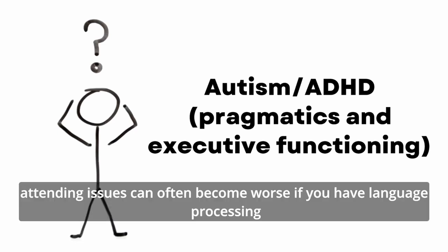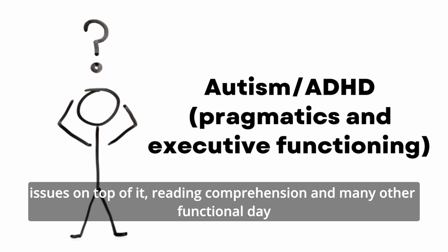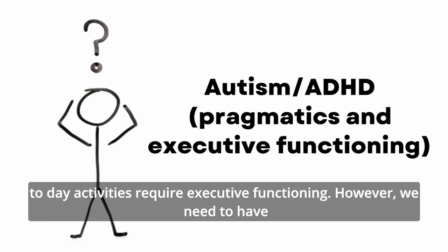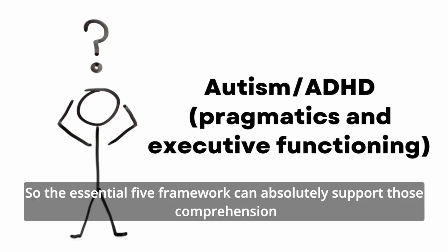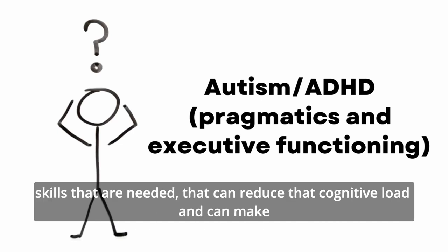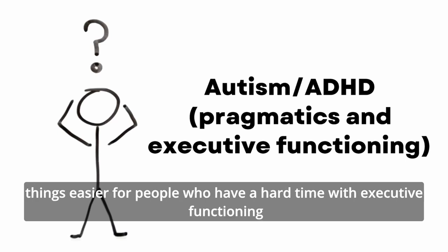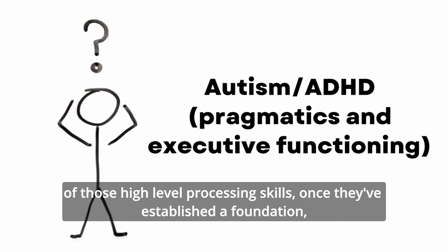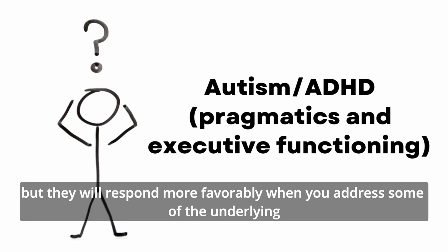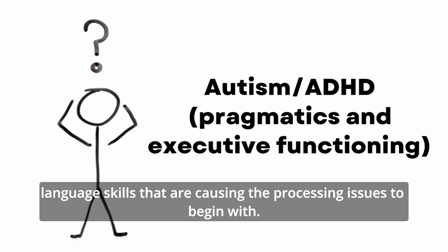Attending issues can often become worse when language processing issues are on top of them. Reading comprehension and many day-to-day activities require executive functioning, but we need underlying language skills to support those skills. Building language processing skills can reduce cognitive load, making it easier to attend to tasks. The Essential 5 framework can support the comprehension skills needed to reduce cognitive load and make things easier for people who have difficulty with executive functioning and attending. Students will respond more favorably when underlying language skills causing the processing issues are addressed first.